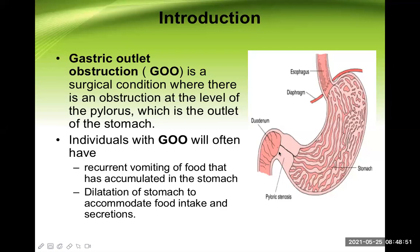Looking at the picture: here is the stomach, this is the greater curvature, here is the lesser curvature, this is the body of the stomach, here is the fundic part, and this is the pyloric end — this is called the pyloric sphincter. If something goes wrong in the pyloric sphincter — if the pyloric canal becomes very narrow because of some obstruction or fibrosis — that is known as pyloric stenosis.